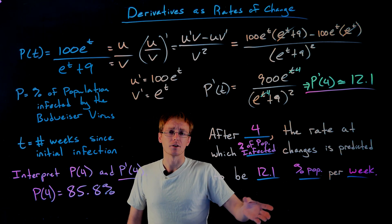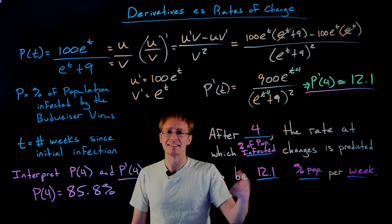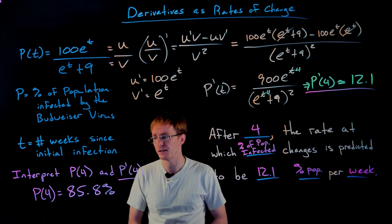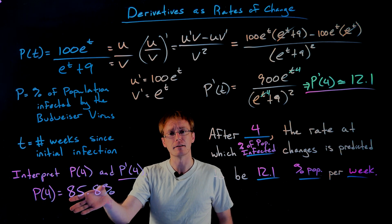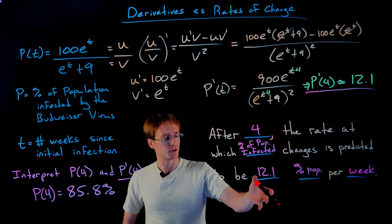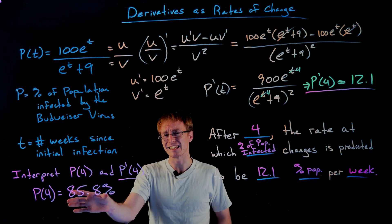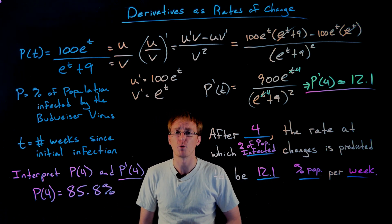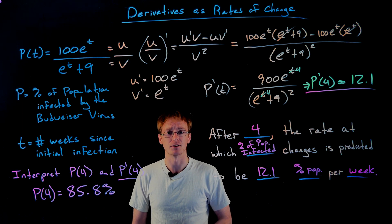So if the rate of change were constant for that entire week — which it won't be, but assuming it is — then after four weeks about 85.8 percent of the population would be infected. If we let time go on for one additional week, the rate predicts an additional increase of 12.1 percent, putting us up to about 97.9 percent.